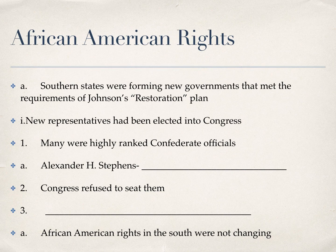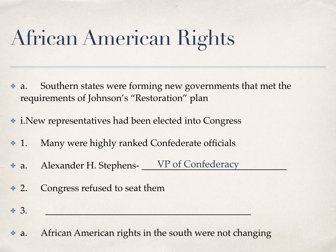Under Johnson's plan called Restoration, southern states were starting to form new governments that met his requirements. Under his requirements, high-ranking Confederate officials were able to take office, and one of those was Alexander Stevens. He was the vice president of the Confederacy and yet had been elected into Congress just a year or so after the Civil War. Do you want to put those people in charge of the federal government after what they did? The answer is typically no, but Andrew Johnson wasn't really interested in that. So the Republicans who controlled Congress refused to seat them.